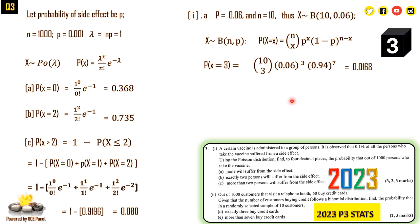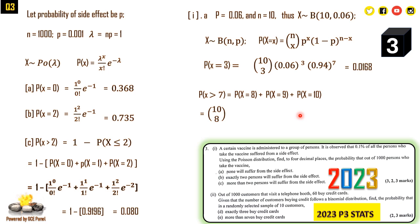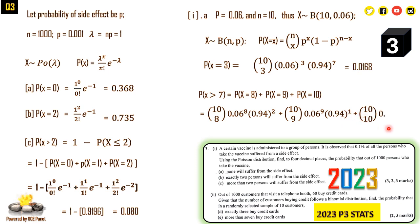For part (a), P(X = 3) = C(10,3) × (0.06)^3 × (0.94)^7, which simplifies to approximately 0.0168. You can also use tables. For part (b), P(X > 7) means P(X = 8) + P(X = 9) + P(X = 10) = C(10,8)(0.06)^8(0.94)^2 + C(10,9)(0.06)^9(0.94)^1 + C(10,10)(0.06)^10. Note that 0.94^0 = 1. When you simplify all of that, the value is approximately zero.